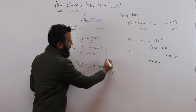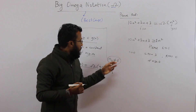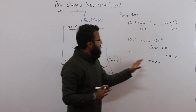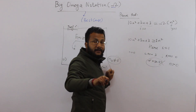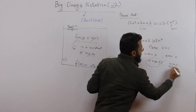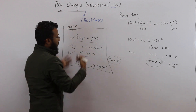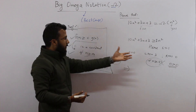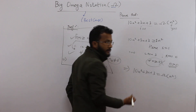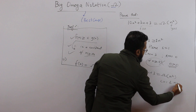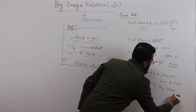Remember, n naught can never be 0 because n is the input size, and input cannot be 0 — it should be at least 1. So instead of writing n ≥ 0, it is always good to write n > 0. We have shown the value of c = 1 and the value of n naught. Therefore, we can conclude that 10n² + 3n + 3 is Omega of n² for c = 1 and n > 0. This is proved by the definition of Big Omega.